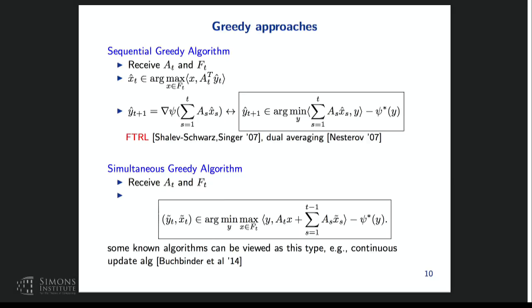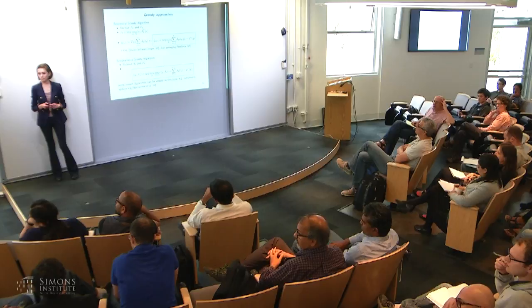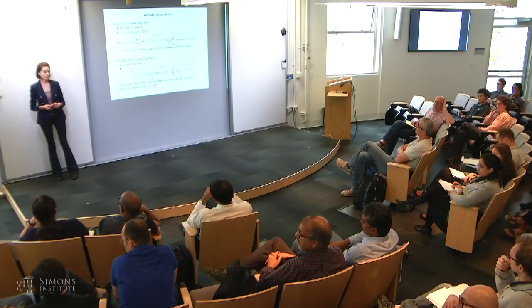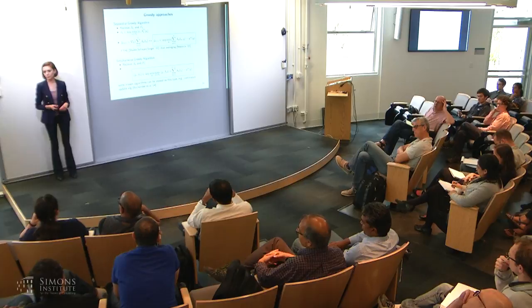To get a bound on competitive ratio, we need an assumption. We say psi satisfies diminishing returns: if vector u is bigger than vector v with respect to cone k, then the gradient of psi at u is less than the gradient of psi at v with respect to the dual cone. For R^n_+, this means if the vector is entry-wise increasing, the gradient entry-wise decreases—the more the value increases, the lower the slope. This is the diminishing return property.